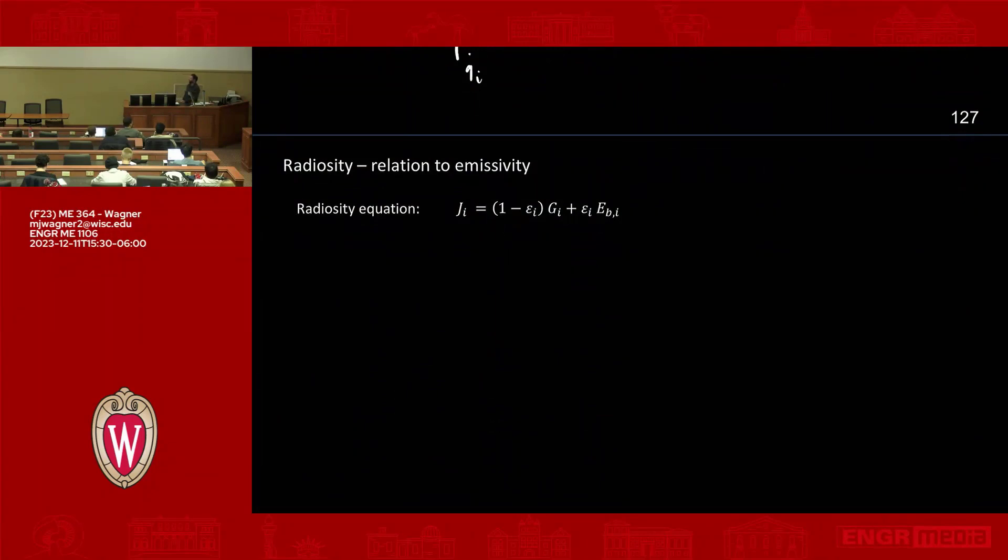There's our radiosity equation. So this is I think what I just wrote more or less. Let's do now is rearrange this in terms of irradiation g. So if we rearrange and solve for g we get j i minus epsilon i times ebi divided by one minus epsilon i.